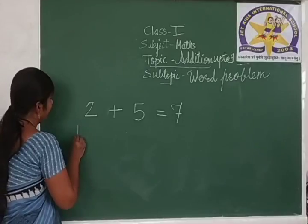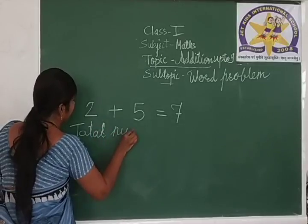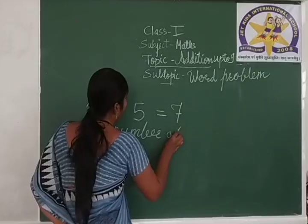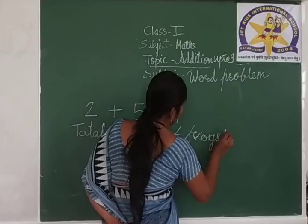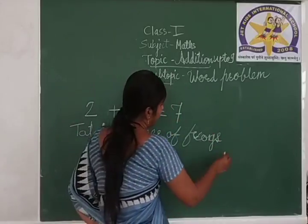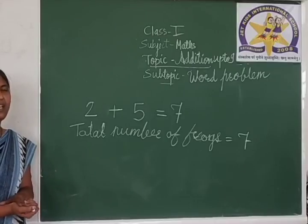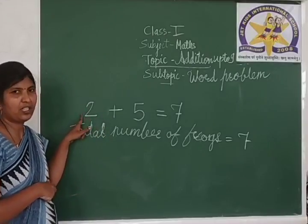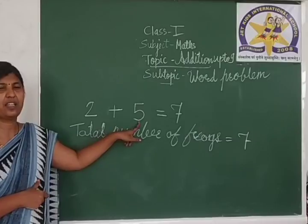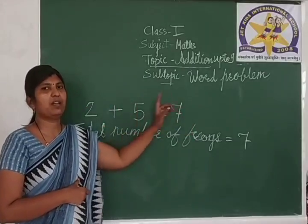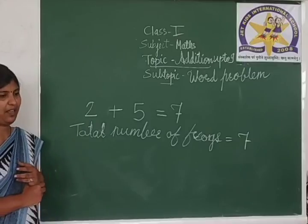Total number of frogs equals 7. How did we get the answer? In the word problem we got two numbers — two frogs. We wrote 2 here, five frogs joined them, so we wrote the next number 5 in the next box. We added these two numbers and got the total number of frogs: 2 plus 5 equals 7.